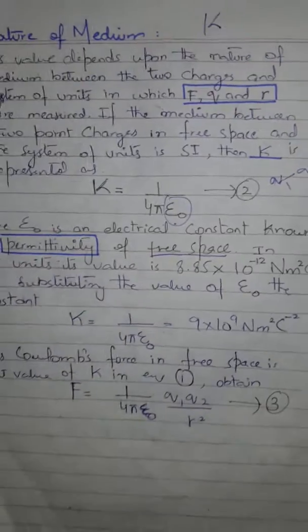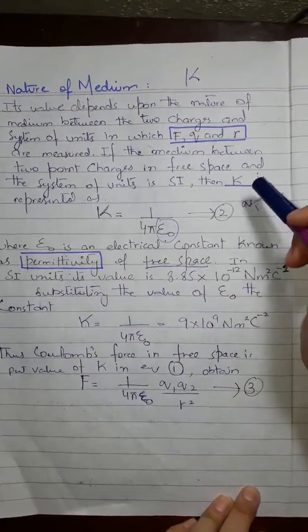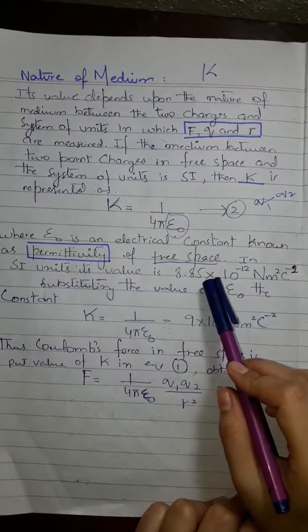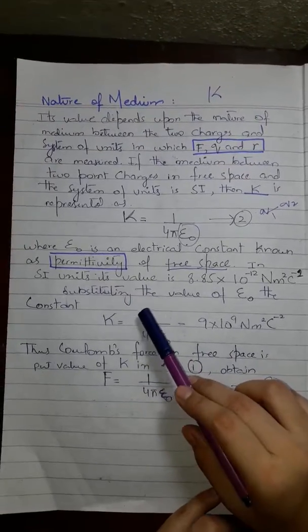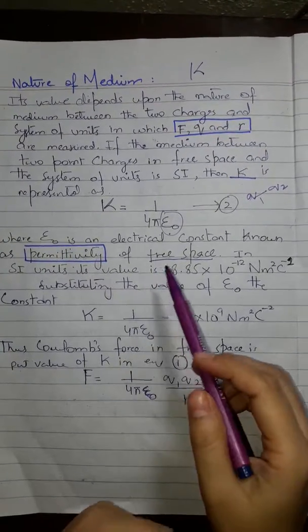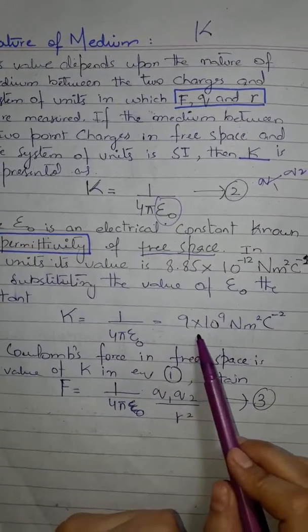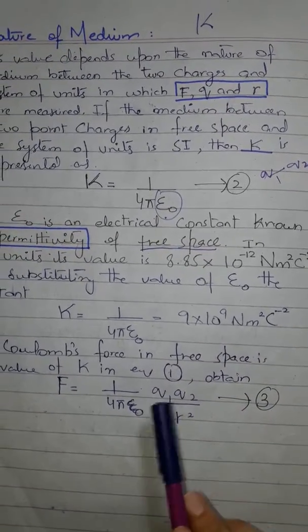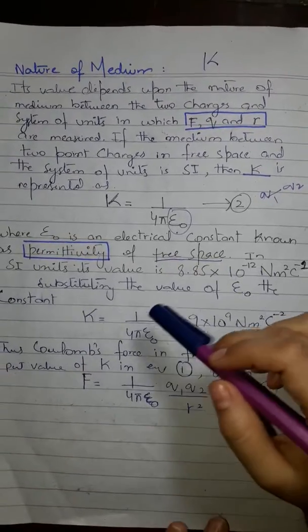If the medium between two point charges is free space and the system of units is SI, then k is represented as k = 1 / (4πε₀), where ε₀ is the electrical constant known as the permittivity of free space. Between q1 and q2 existing in free space, the proportionality constant k is denoted by this formula.